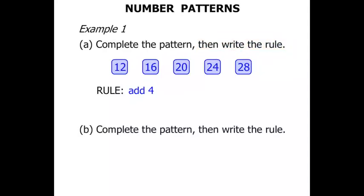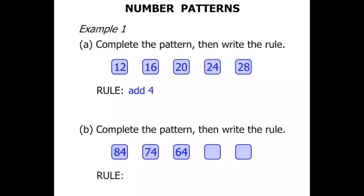The next one: complete the pattern then write the rule again. So here we go: 84, 74, 64. These numbers are going down. So once we work out what we've got to do we're going to write the rule as well. From 84 to go down to 74 we subtract 10. From 74 going down to 64, again we subtract 10.